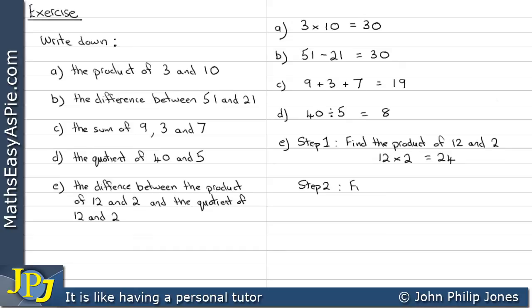So we find the quotient of 12 and 2. Now this means that we take the 12 and we divide it, as you can see here, by the 2 to give us 6.